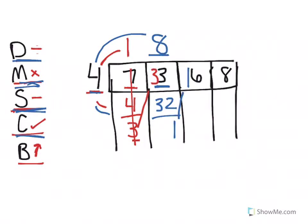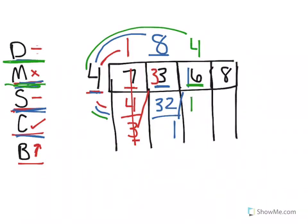Now I want to think — I have 16 divided by 4. So first divide: 4 goes into 16 four times. Now I multiply: 4 times 4 equals 16. Now I subtract: 16 minus 16 is 0. I check — 0 is less than 4. I can bring that up.